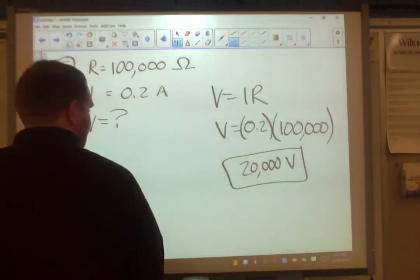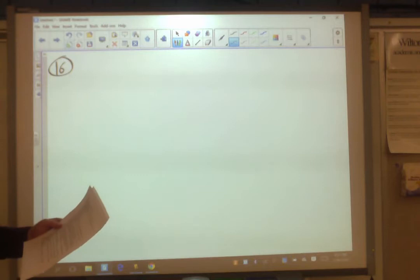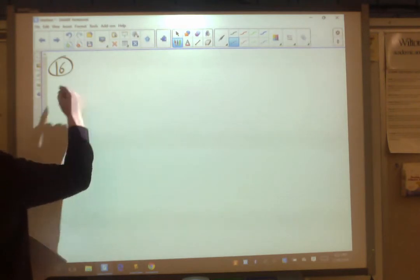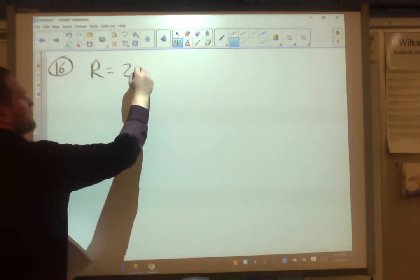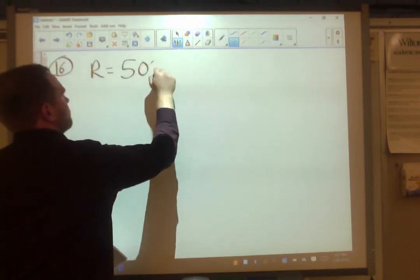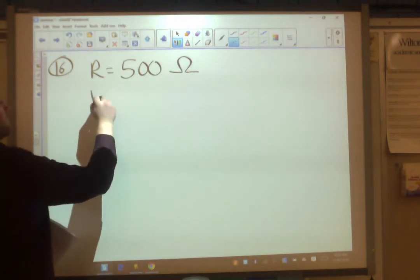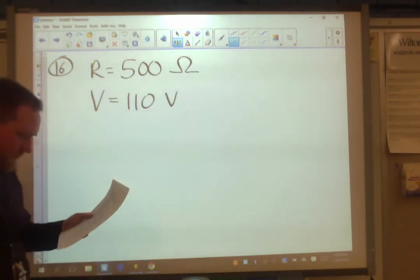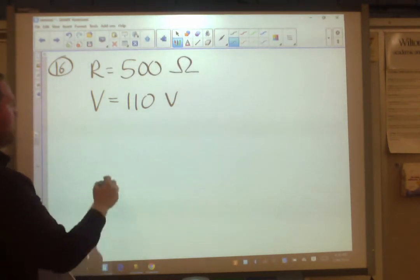Number 16. When the human body is wet and the skin broken, like you have a cut or something, resistance drops to as low as 500 ohms. That's like 200 times less resistance, not good. Resistance equals 500 ohms. In this condition, can the voltage from a simple kitchen appliance, 110 volts, be fatal? Solve for the current and compare it to the fatal threshold of 0.2 amps from the previous question.